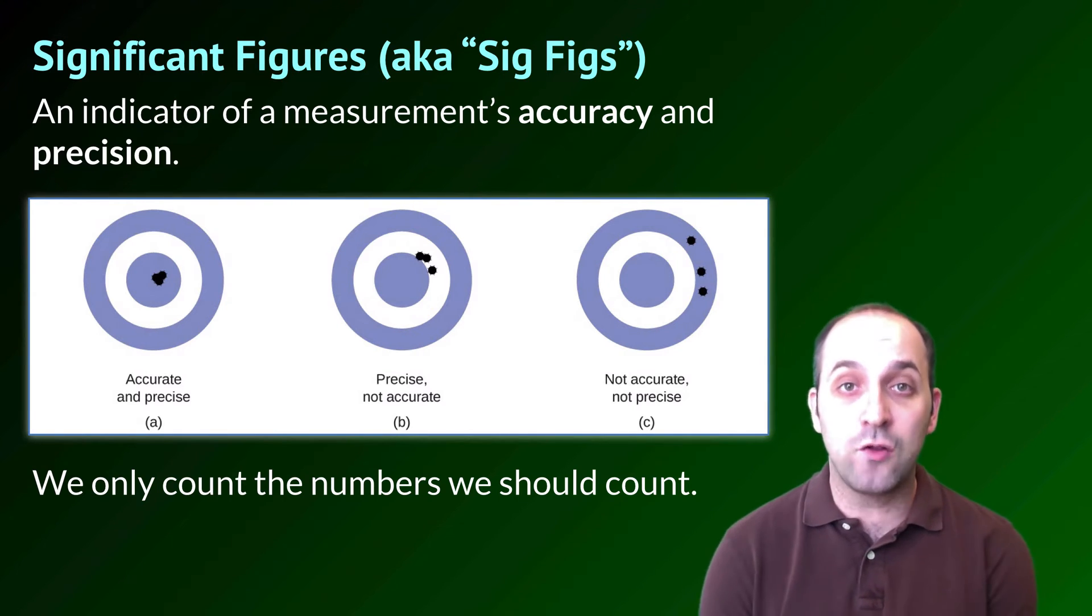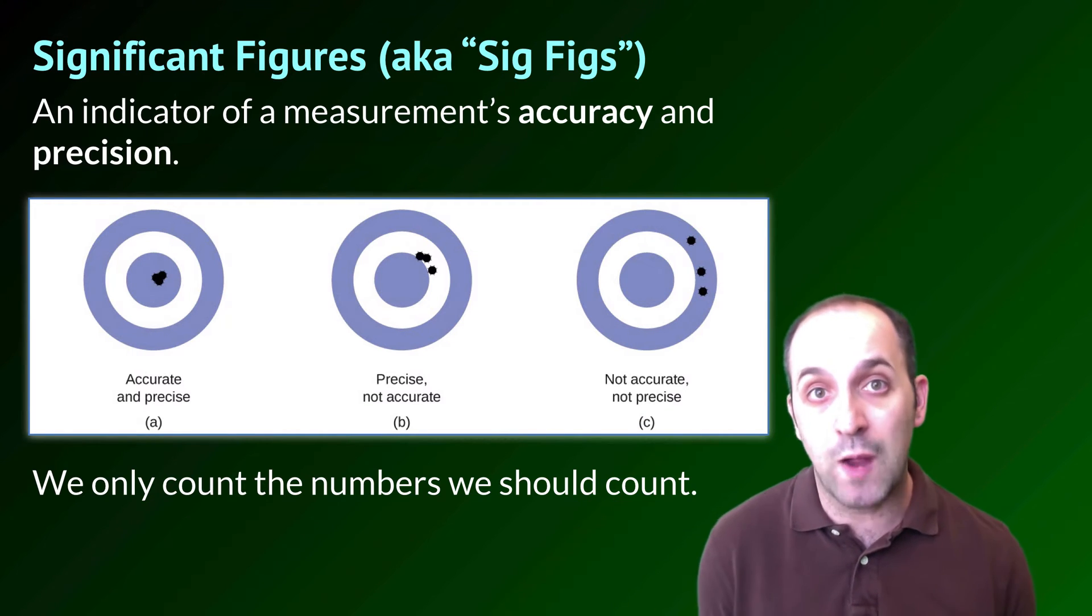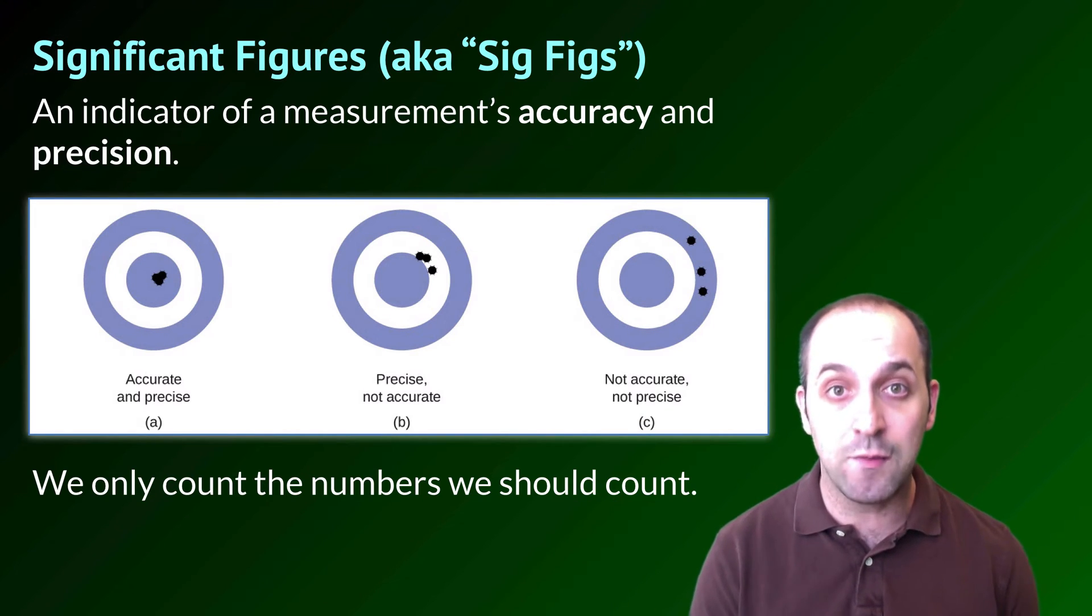In our previous example of the pencil on the ruler, the precision of that measuring device enabled us to make measurements to the nearest hundredth of a centimeter using that ruler, which is why it was 18.73 centimeters in length.